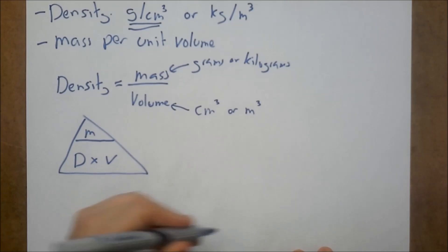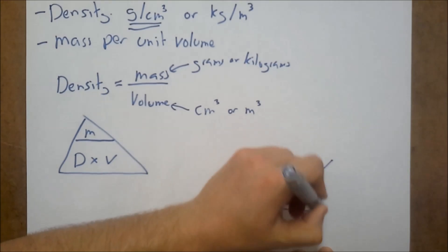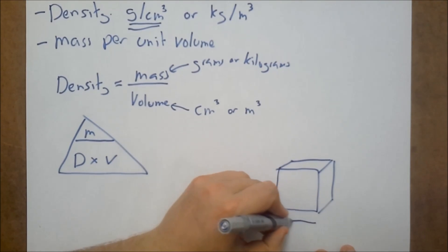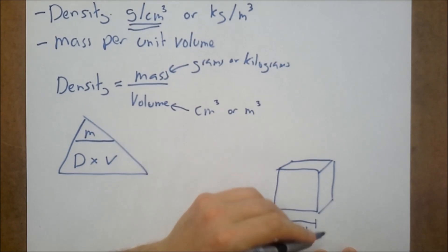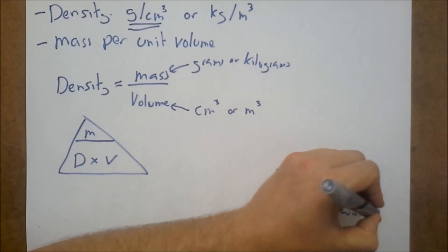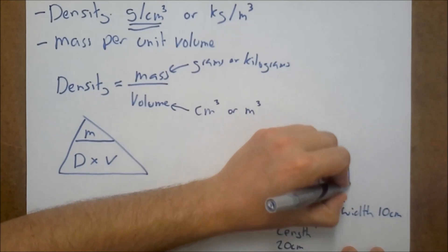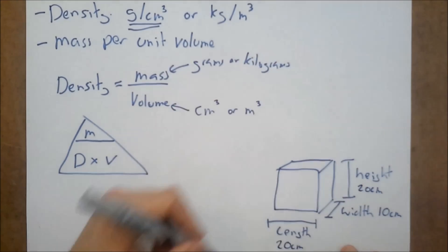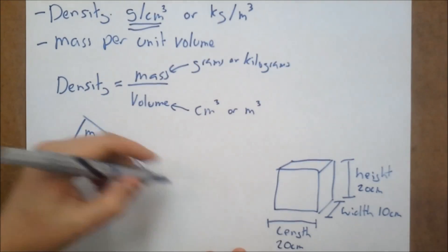So let's have a look at an example. Now here we've got a simple regular shape. We'll have the length of this object, and let's imagine this is going to be 20 centimeters. Maybe the width could be, let's say, 10 centimeters. And finally, the height of the object would equal, say, 20 centimeters.